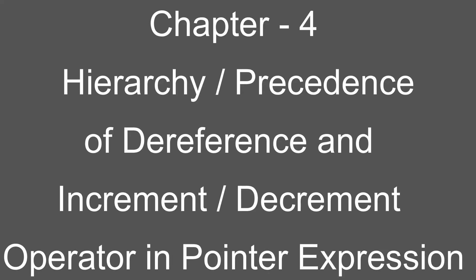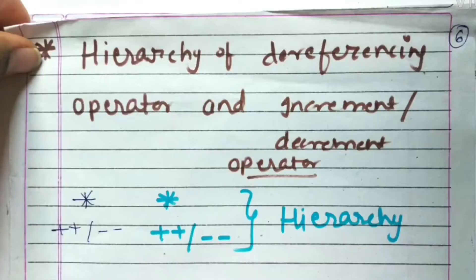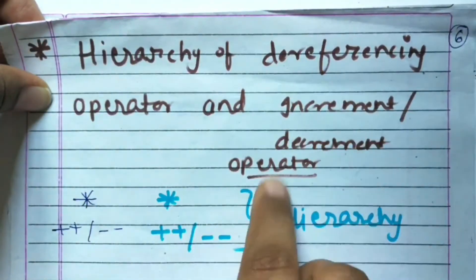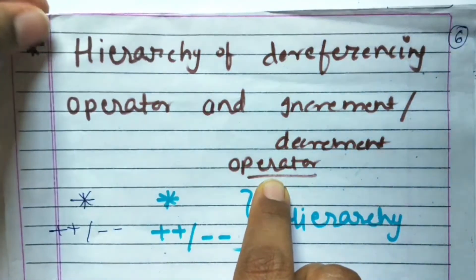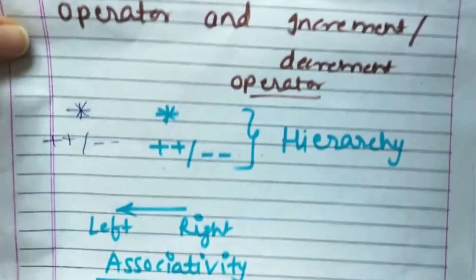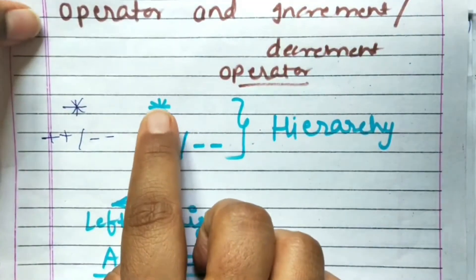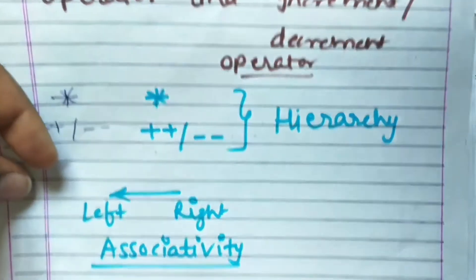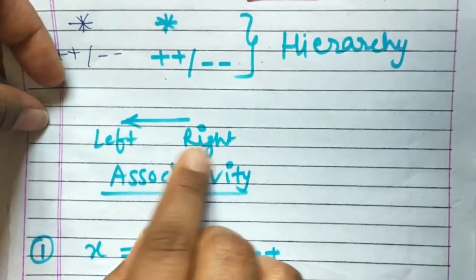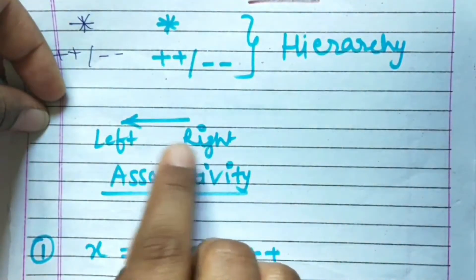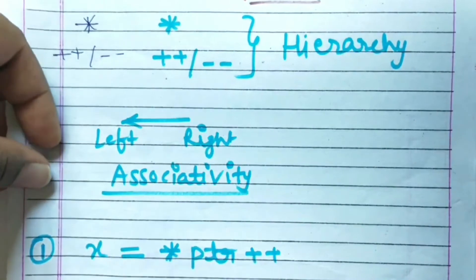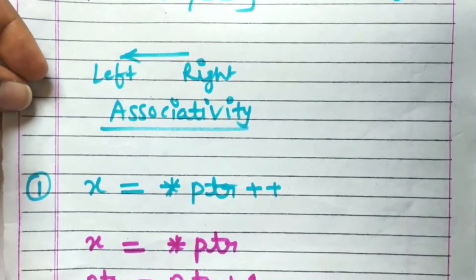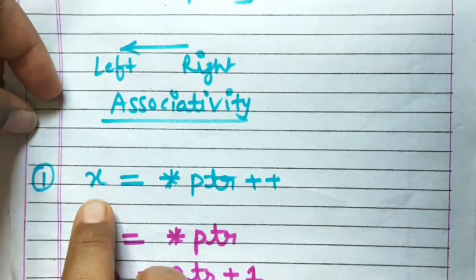Hello guys, welcome back to my channel. Today's topic of discussion is the hierarchy of the dereferencing operator and the increment or decrement operator while evaluating a pointer expression. As we know, the hierarchy of the dereference operator and increment or decrement operator is the same, and its associativity is from right to left. So how do we evaluate a pointer expression when both these operators are present? We will take some examples.